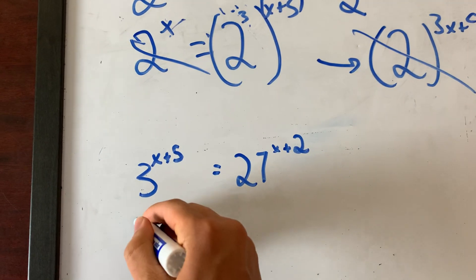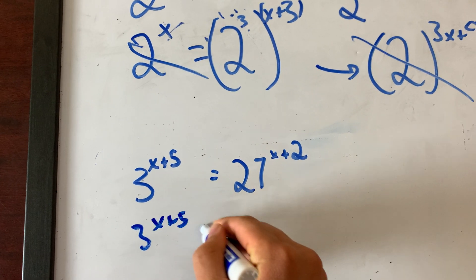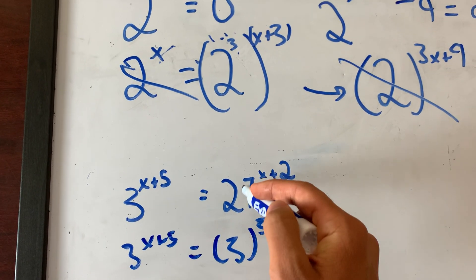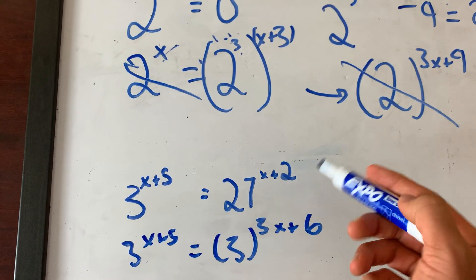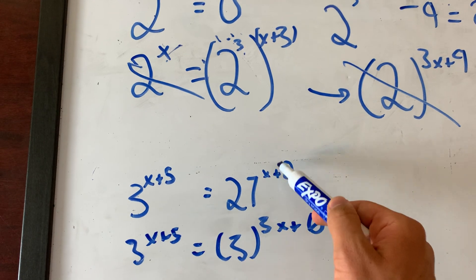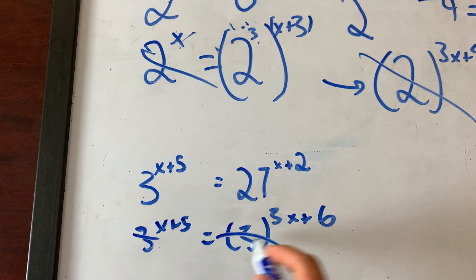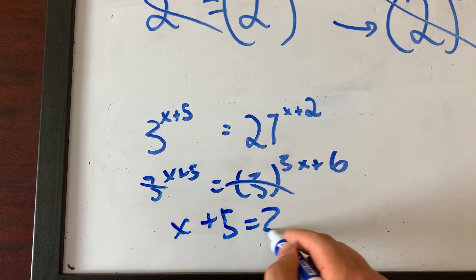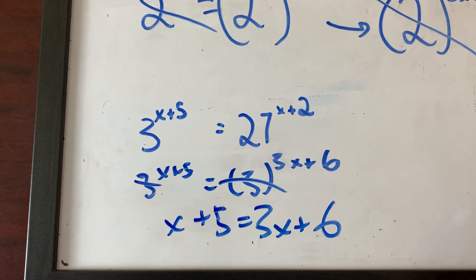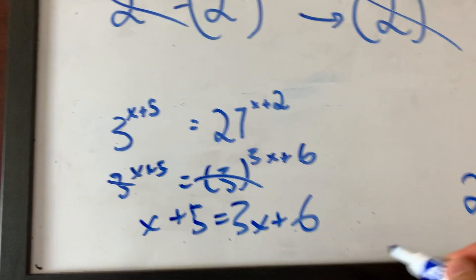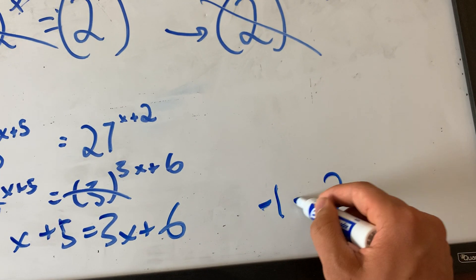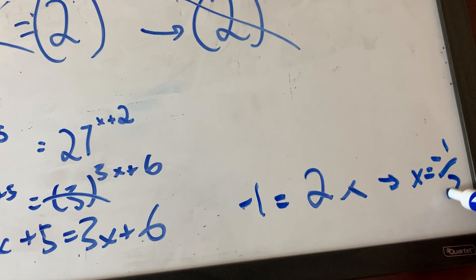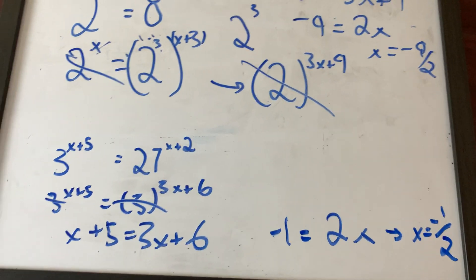3 to the x plus 5 is equal to 27 to the x plus 2, which becomes 3 to the 3x plus 6. Why? Because 27 can be written as 3 cubed. 3 cubed times x plus 2 equals 3x plus 6. Cross out the bases, set the exponents equal: x plus 5 equals 3x plus 6. Subtract x to get negative 1 equals 2x, which means x equals negative 1 over 2. Done.